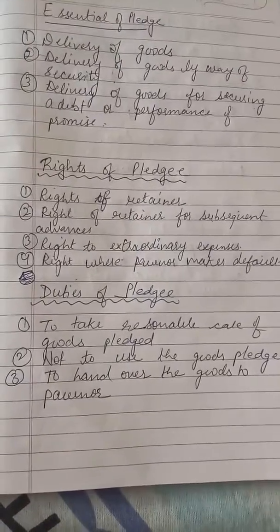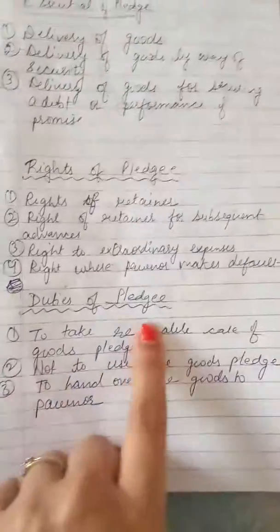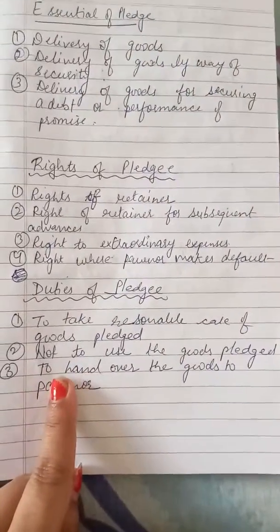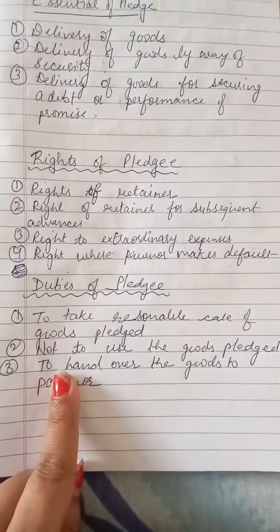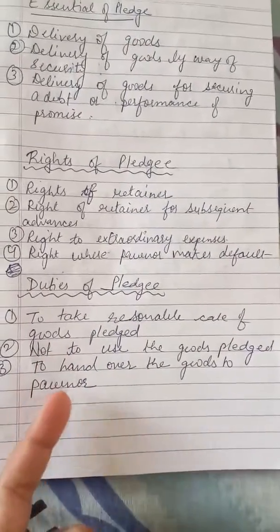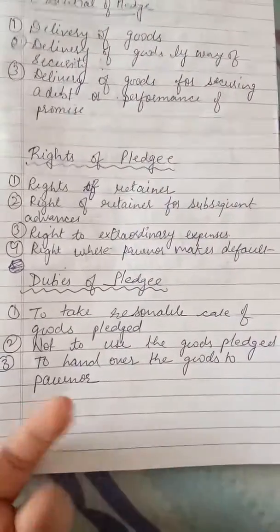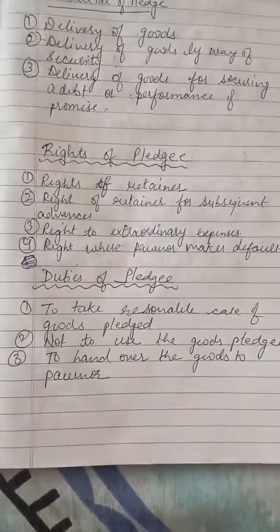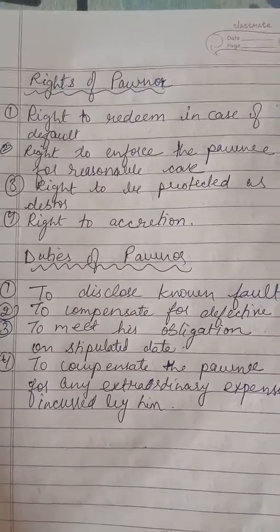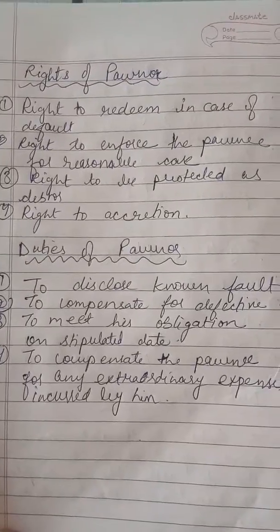Next is the duties of the pledgee. Pledgee की duty बनती है कि जो goods उसको deliver किये गए हैं उनकी reasonable care करे. Next duty is not to use the pledged goods - जो goods उसको deliver किये गए हैं वो उनका इस्तेमाल न करे. Next duty is to hand over the goods to the pawnor - जब उसको उसके पैसे वापिस मिल जाएं.